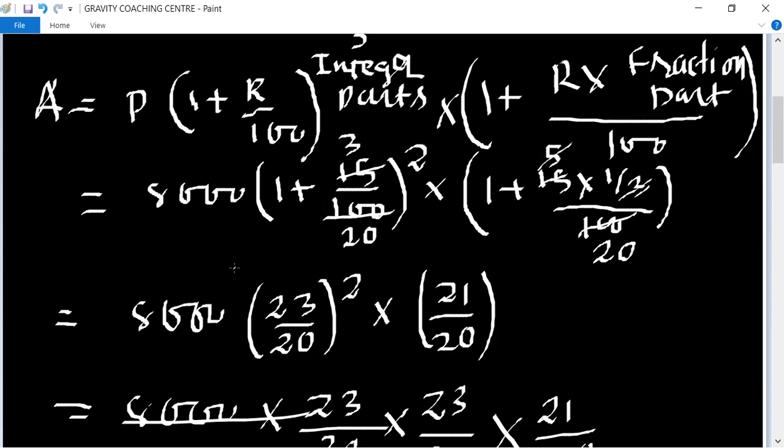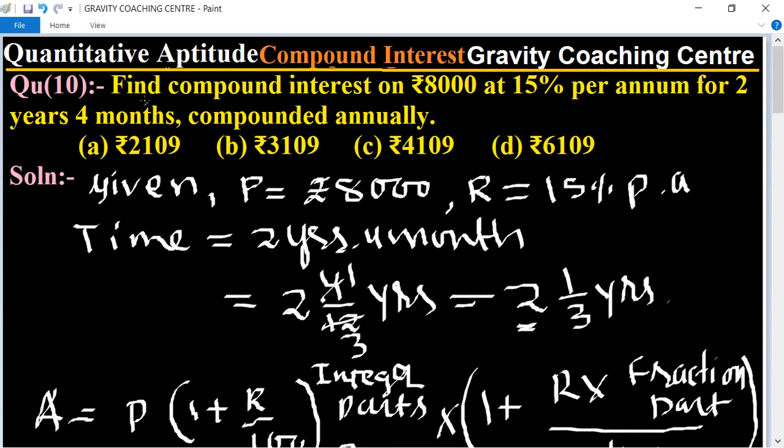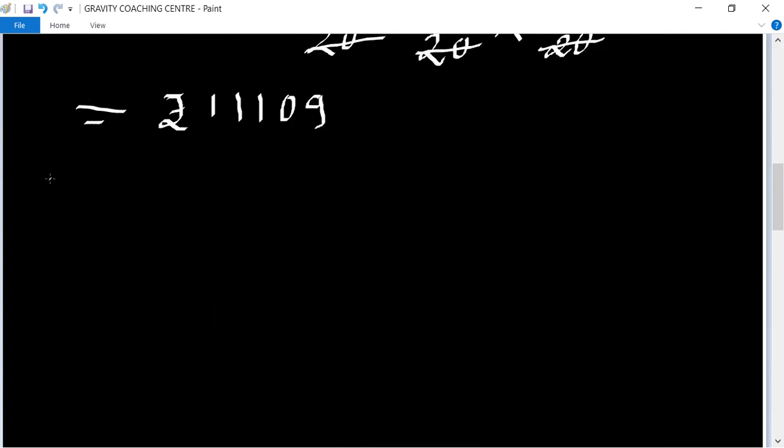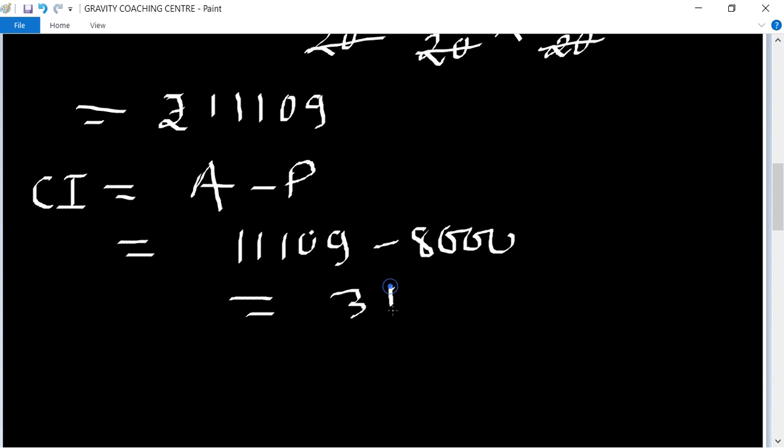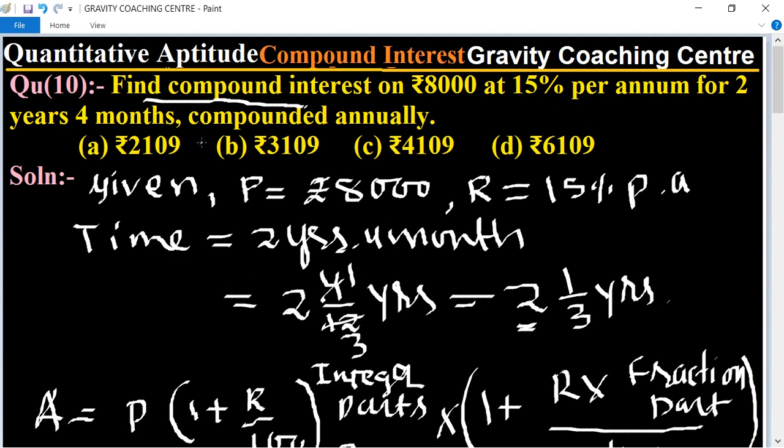So to find the compound interest, formula of compound interest = Amount - Principal. Amount = 11,109 - 8000, so ₹3109 is the compound interest. Option B...